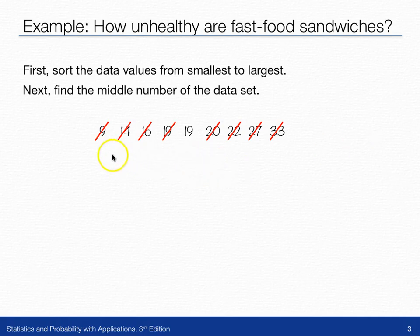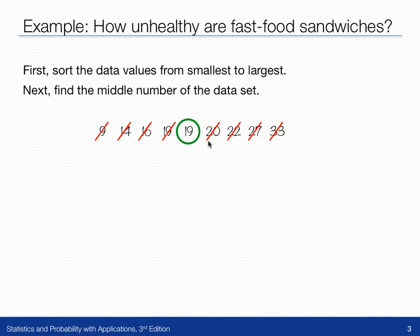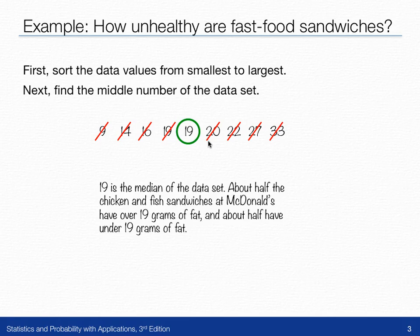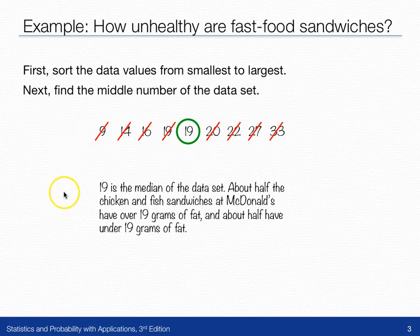Since the number of items in the data set is odd, we will have knocked off the same amount on the low side as on the high side. The number that remains, 19, is the median. About half of the chicken and fish sandwiches at McDonald's have over 19 grams of fat, and about half have under 19 grams of fat — that's how we interpret the median.